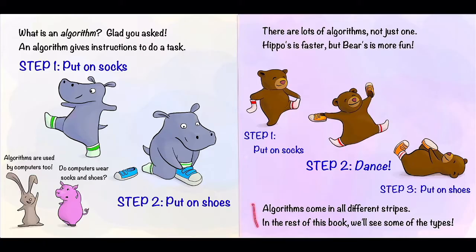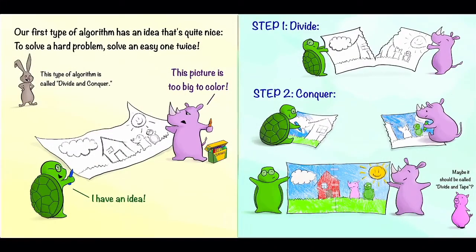Now algorithms come in all different stripes. In the rest of this book, we'll see some of the types. Our first type of algorithm has an idea that's quite nice. To solve a hard problem, solve an easy one twice. Rabbit tells us that this type of algorithm is called divide and conquer.